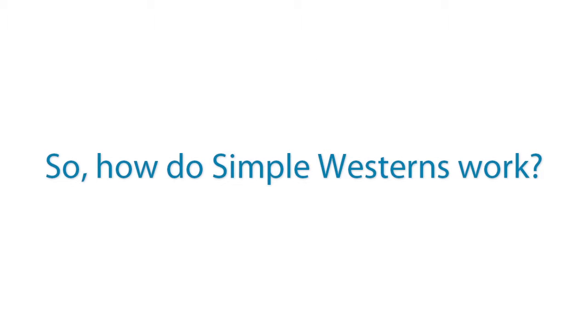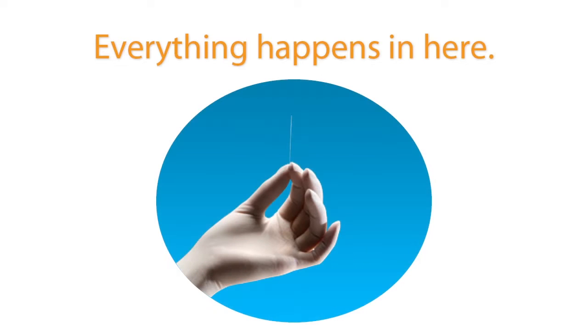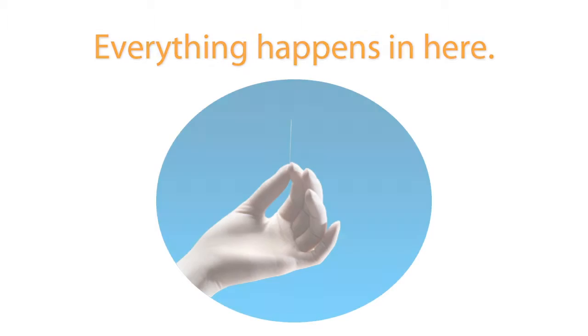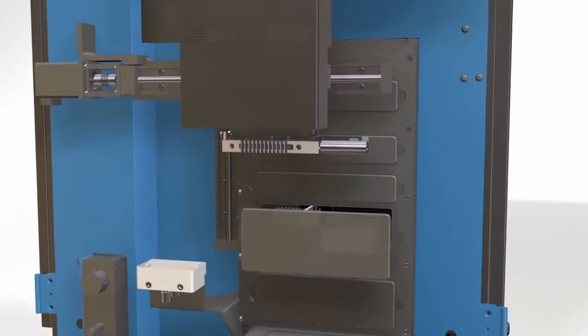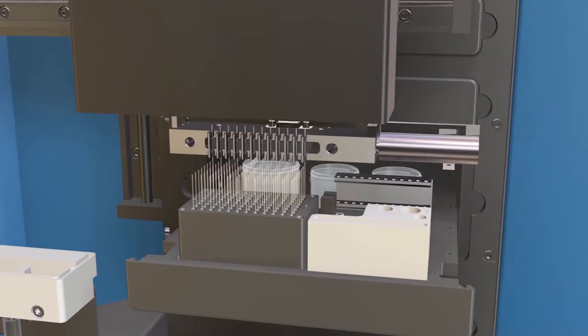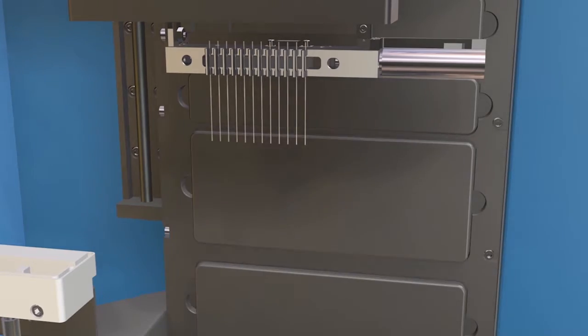You're probably wondering exactly how Sally Sue does Simple Westerns. Well, everything happens inside of a capillary. Sally Sue picks up 12 capillaries at a time for each cycle. She does up to 8 cycles for a total of 96 Simple Westerns.